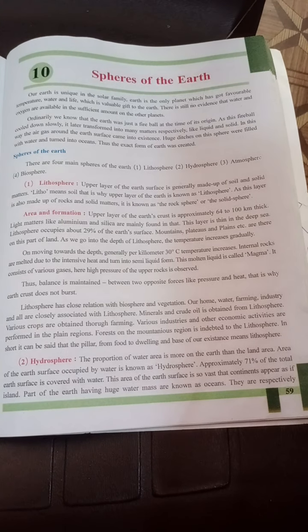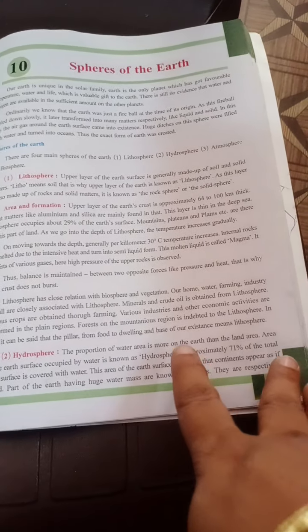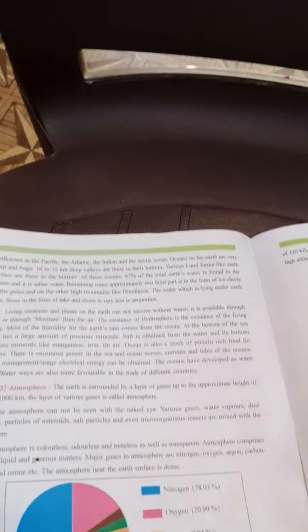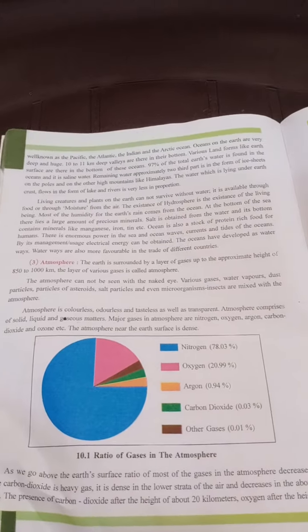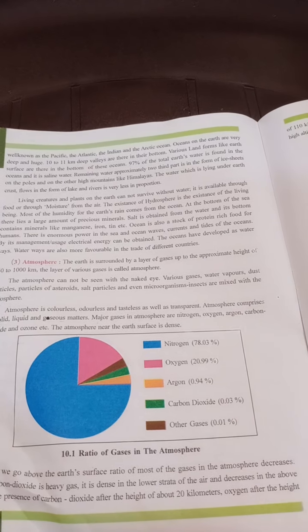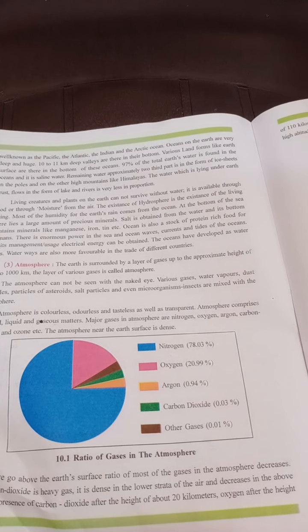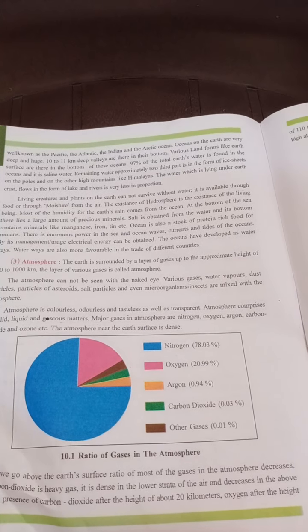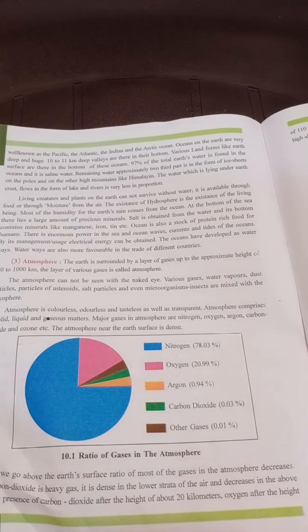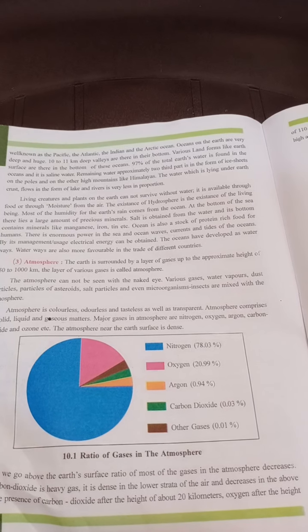Parts of earth having huge water mass are known as oceans. They are respectively well known as the Pacific, Atlantic, Indian, and Arctic Ocean. Oceans on the earth are very deep and huge, and there are valleys up to 11 kilometers deep at their bottom.